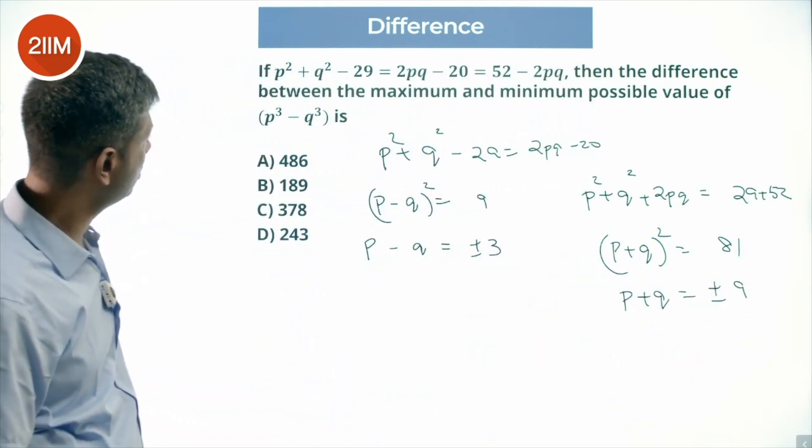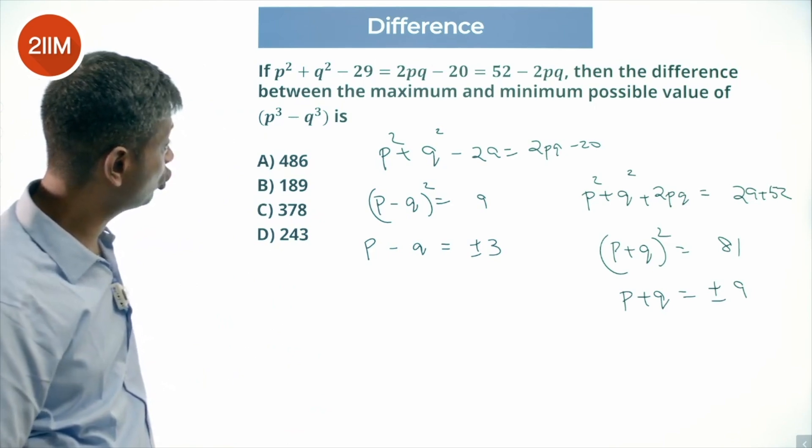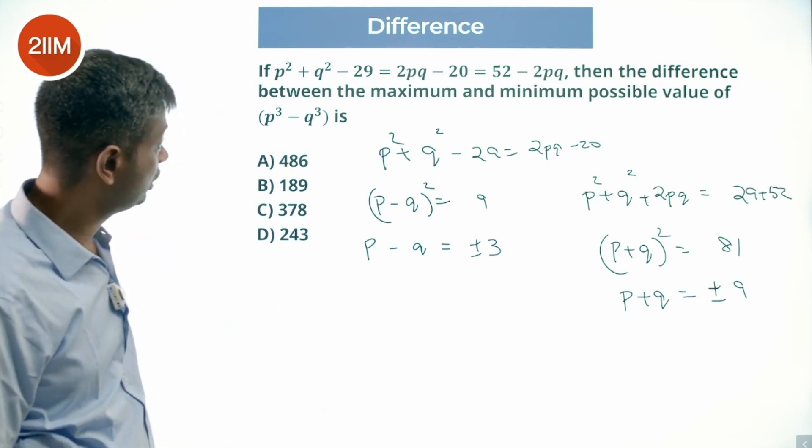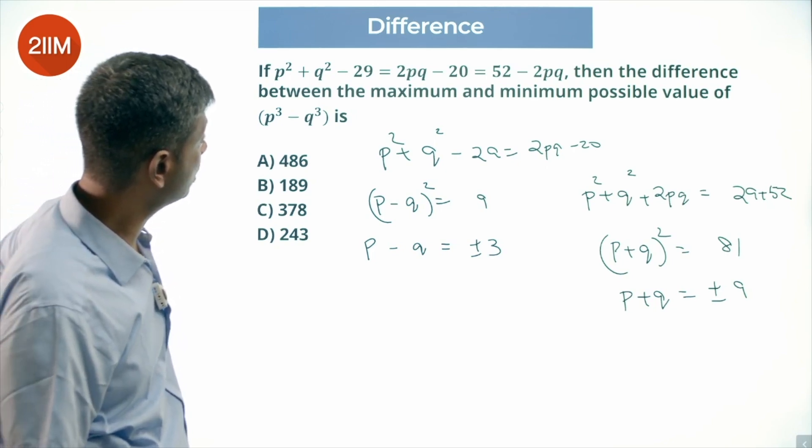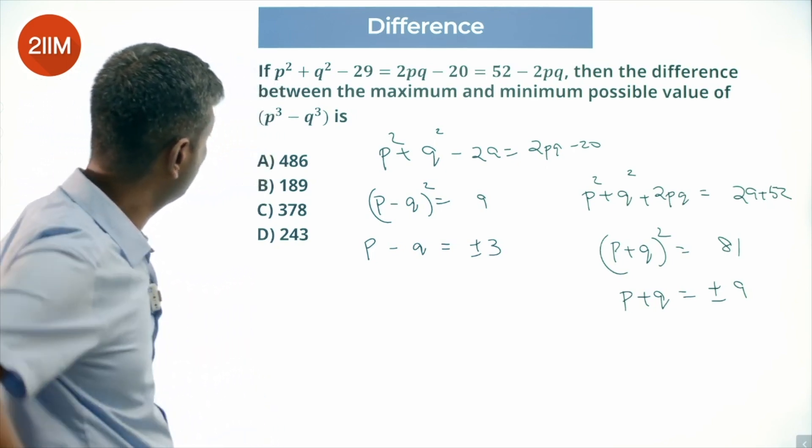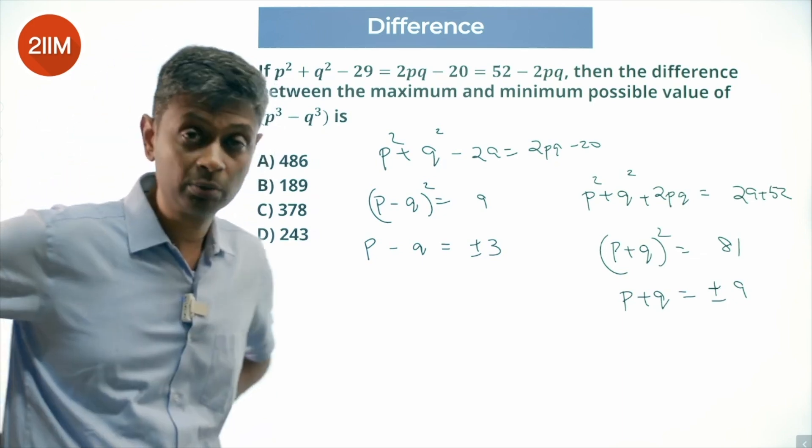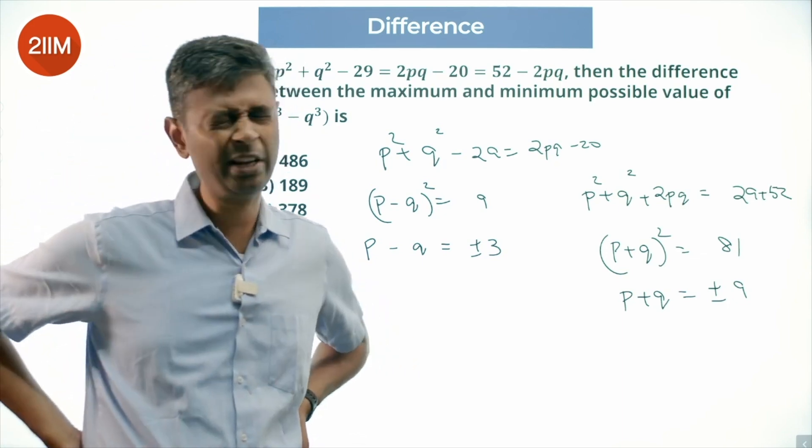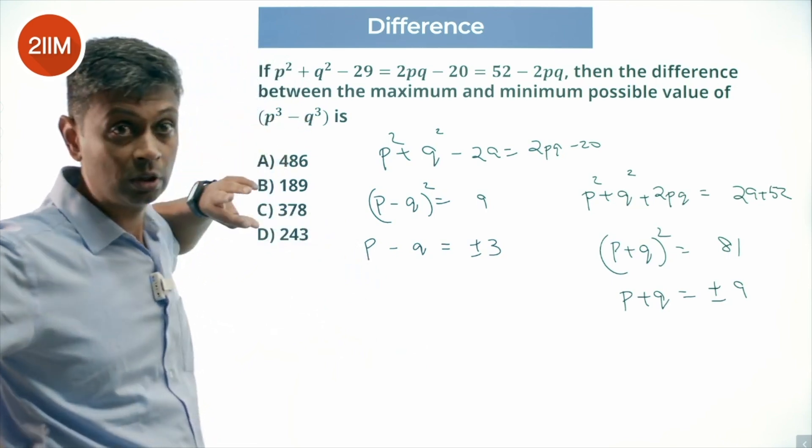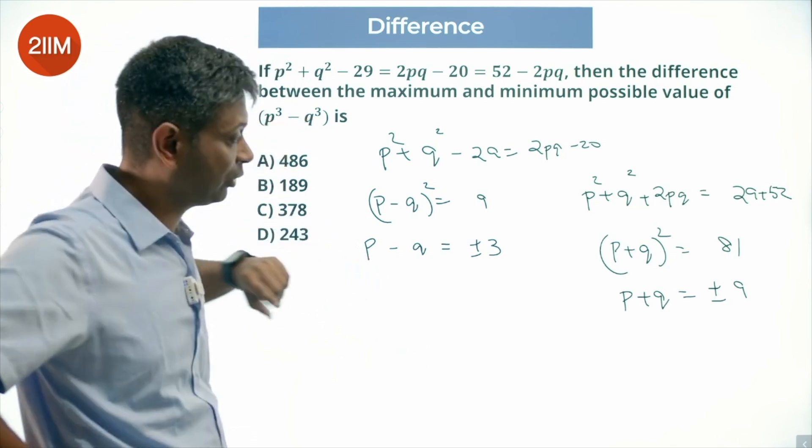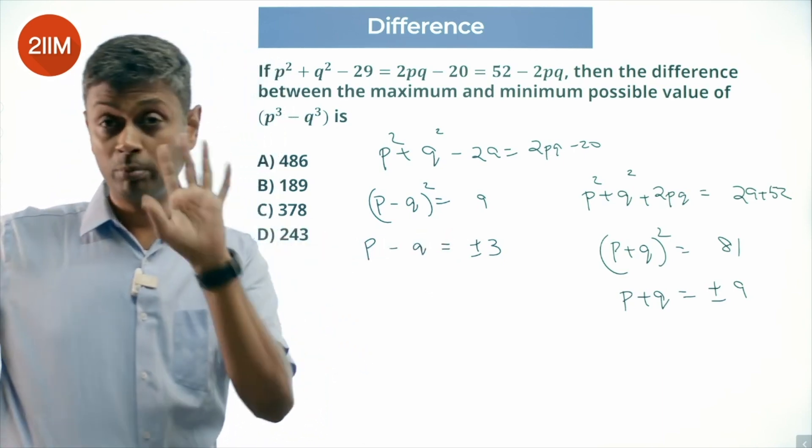Maximum and minimum possible value of P cube minus Q cube. The difference between the maximum possible value and the minimum possible value of P cube minus Q cube. We need to maximize P, minimize Q, and then minimize P, maximize Q, and then do P cube minus Q cube.